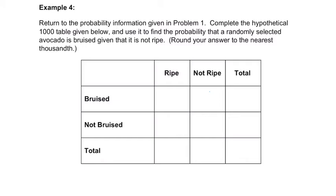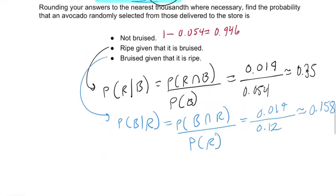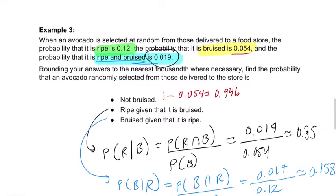All right, so here we're going to complete a hypothetical 1,000 table. We've got 1,000 avocados in total, and I want us to go back and look at the previous problem and use this information.